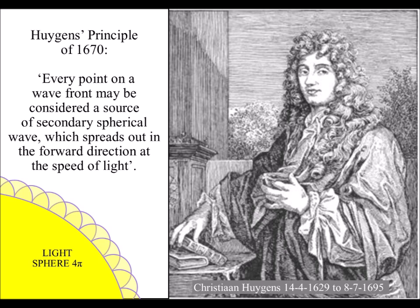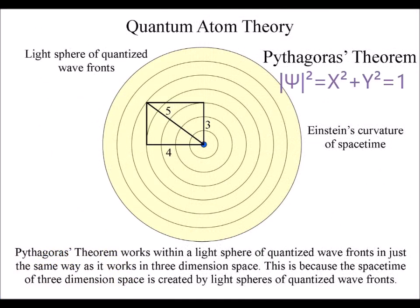That said, every point on a wave front has the potential for a new spherical wave. The spherical geometry gives us a reason why the probabilities always add up to 1.